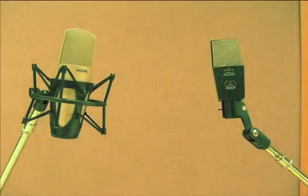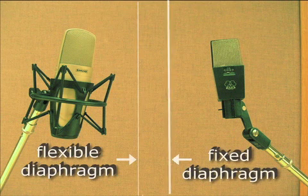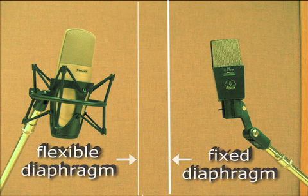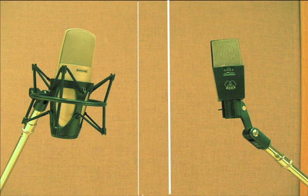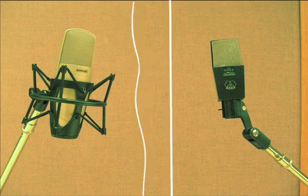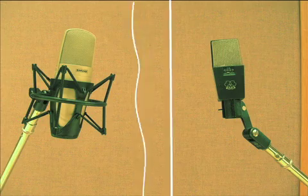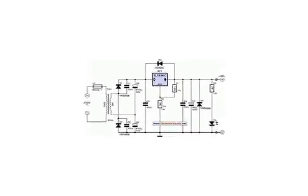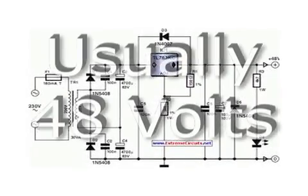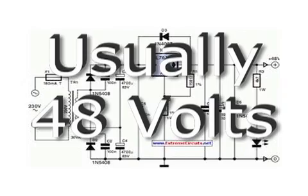Capacitor mics, usually called condensers, have two diaphragms just as capacitors do. The charge on the capacitor is determined by the distance between the diaphragms. As sound pressure deforms the flexible diaphragm, the capacitance changes and produces electricity. Since the diaphragms need electricity to act as a capacitor, these mics all require power to operate.